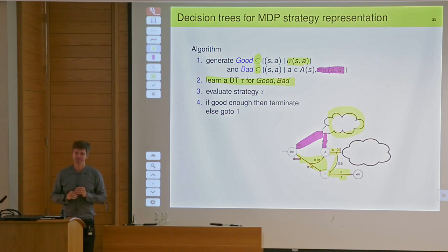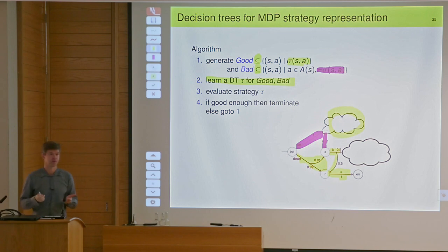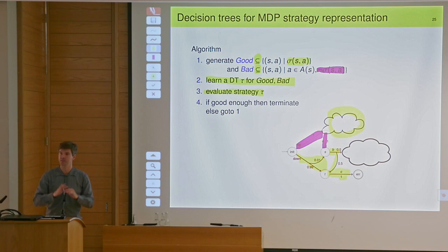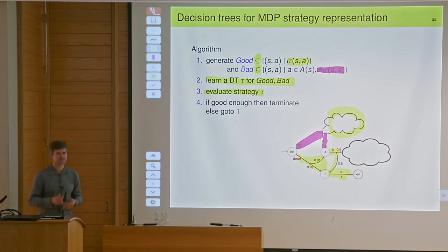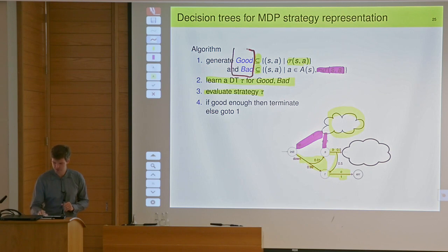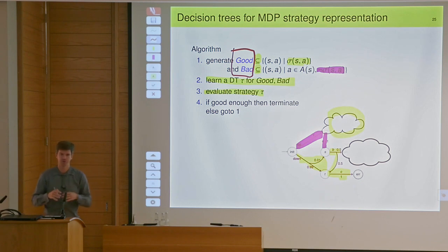Once you learn a tree, it may be the wrong one — it's a product of learning. So you look at whether it's good or not. If it's good enough, you say okay, this is the result. If it's not good enough — meaning it's not capturing enough information so that if you play according to that strategy you're losing or losing with too high a probability — then you have to do something better about what you learn from: provide more information, more targeted information.